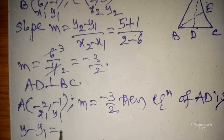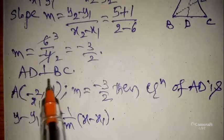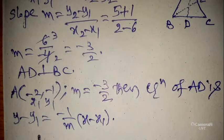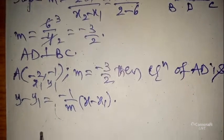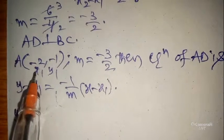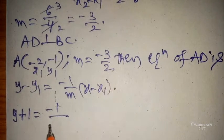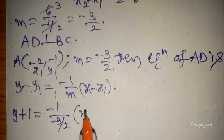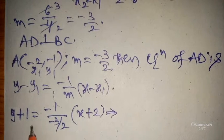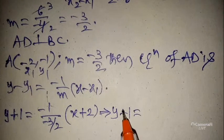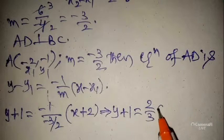The equation of AD is: y − y1 = (−1/m)(x − x1), because AD is perpendicular to BC. Substituting: y − (−1) = (−1 / (−3/2)) × (x − (−2)). Minus of minus gives plus, so y + 1 = (2/3)(x + 2).